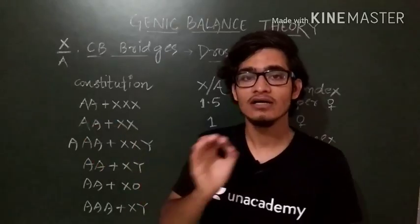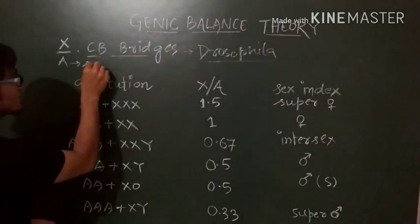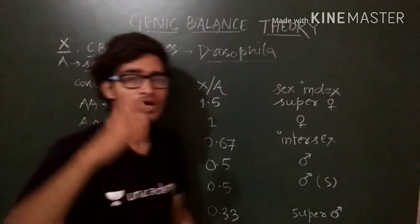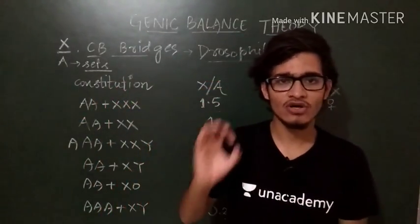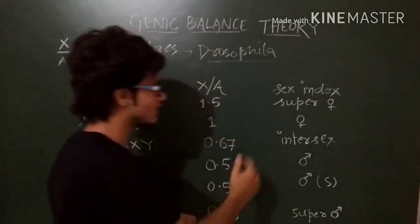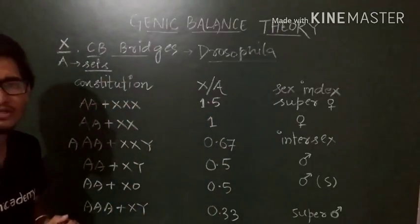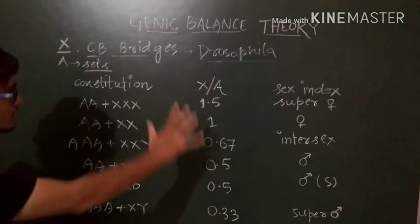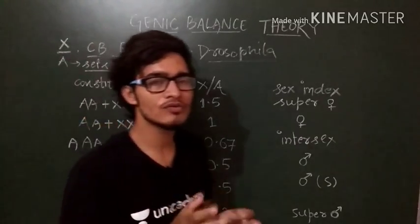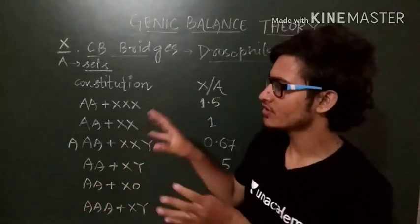And A is the sets of autosome. Sets of autosome. This is important: X chromosome or sets of autosome. According to that ratio, he has classified them into different categories. He has told that Y chromosome does not play any critical role in the sex determination of Drosophila.